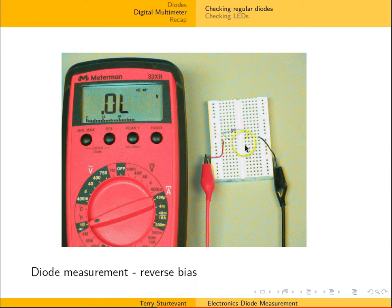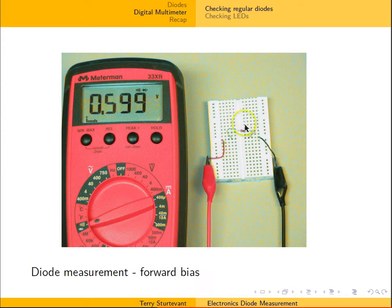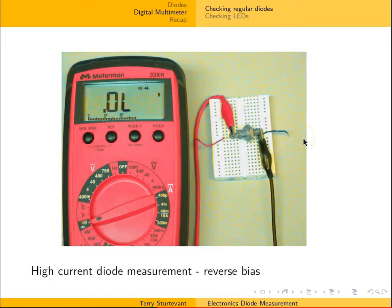Here we have a different diode. Again we can see the cathode at this end, showing an open circuit. And now when it's been turned around, again we see a voltage. Now the cathode is at the other end.